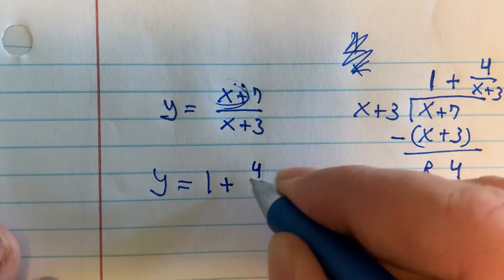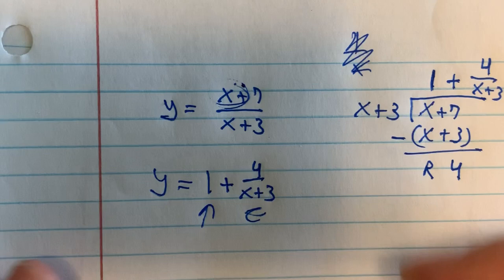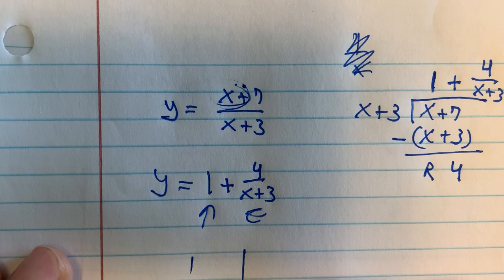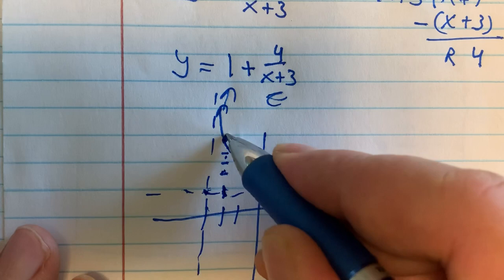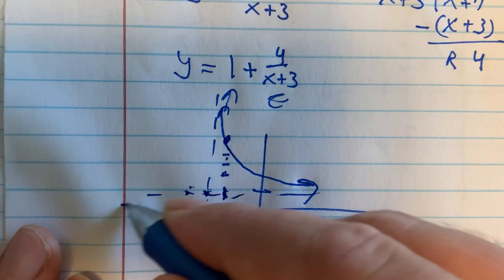So (x plus 7) over (x plus 3) equals 1 plus 4 over (x plus 3) — and now this is a transformation of the parent function. It's multiplied by 4, shifted left by 3, and shifted up by 1. The asymptotes are at x equals negative 3 and y equals 1. Instead of a point 1 over and 1 up from the asymptote intersection, the point is 1 over and 4 up, and similarly 1 over and 4 down on the other side.